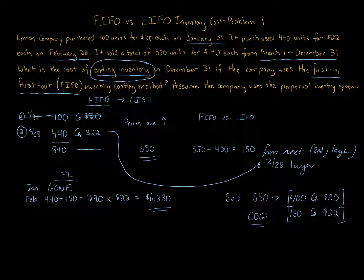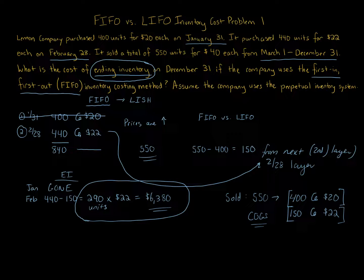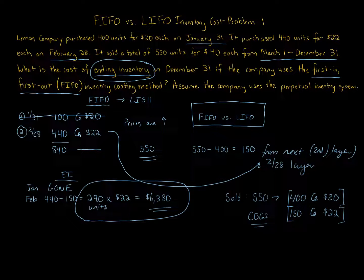The ending inventory of 290 units at $22 per unit is $6,380. We also set up the cost of goods sold calculation along the way. Remember, you can apply FIFO versus LIFO conceptually — thinking about prices going up or down — and compare ending inventory, cost of goods sold, and tax effects. The question asked for ending inventory, and we determined it is $6,380.